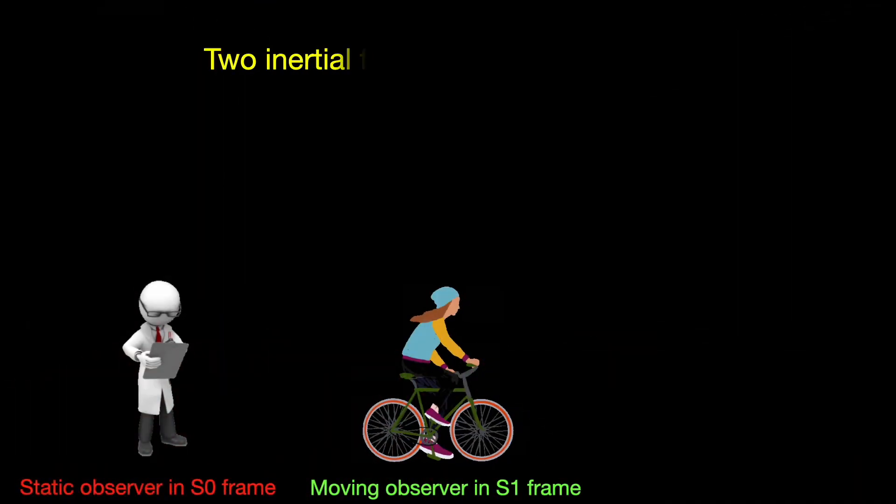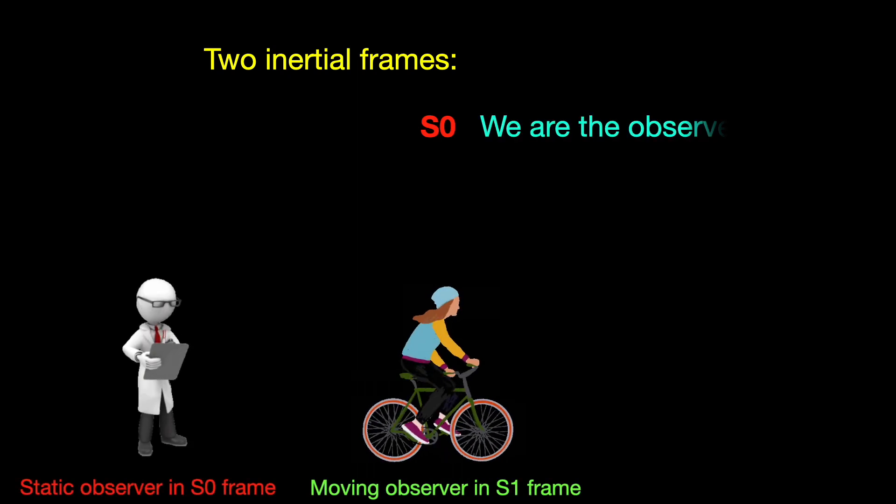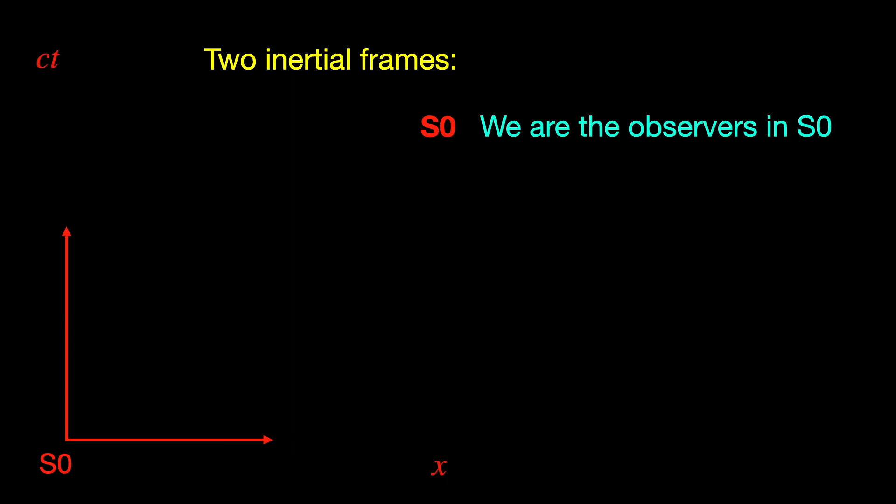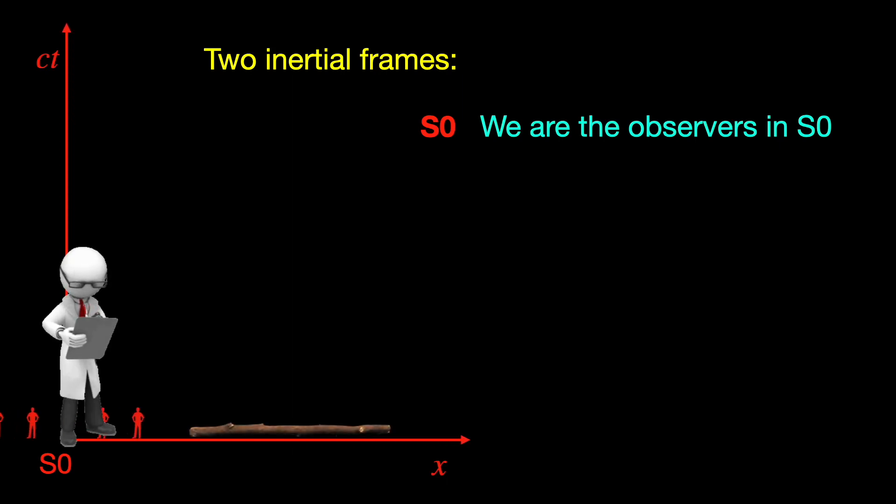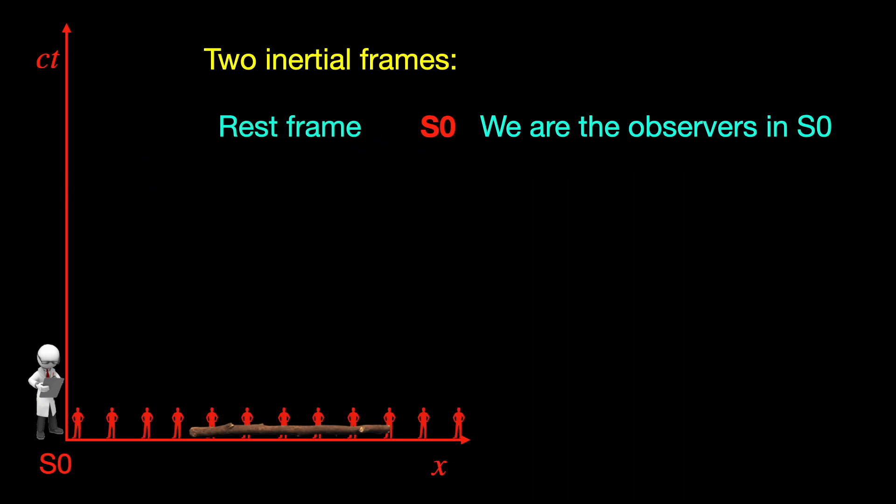So two inertial frames. One is our frame S0. You, me and the others watching this video are the observers in this frame. We are analyzing this. Naturally the space-time diagram we shall use are drawn from our perspective. Let's take a stick at rest in our frame S0. Our job here is to measure its length. Obviously S0 is the rest frame of the stick.